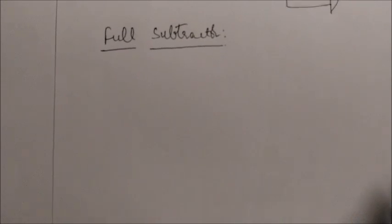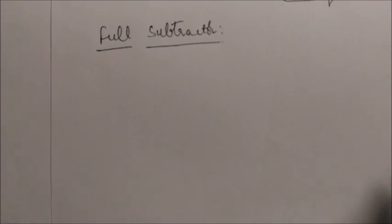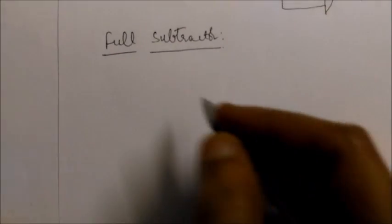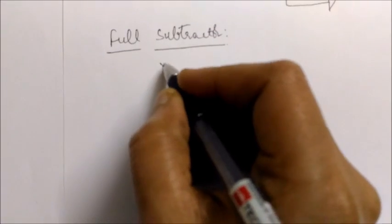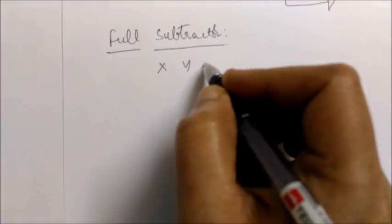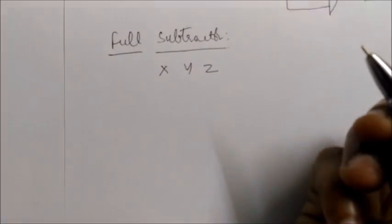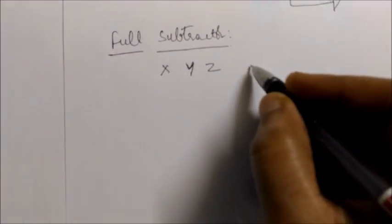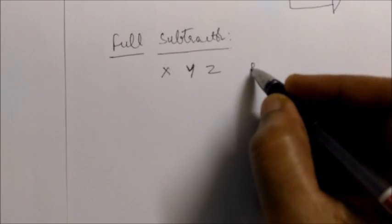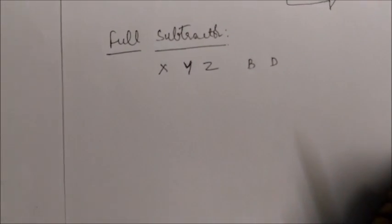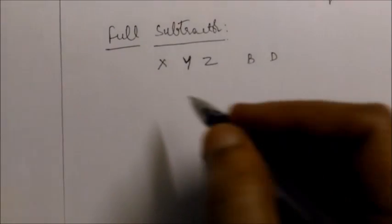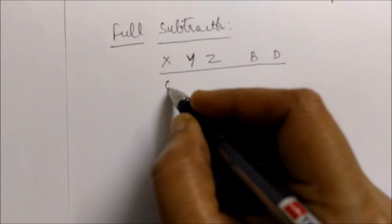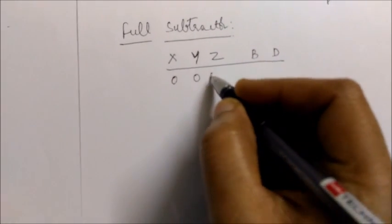In this video we are going to discuss about the full subtractor. A full subtractor will have three inputs x, y, and z, which represent the minuend, subtrahend, and borrow-in. The outputs are borrow and difference. With three inputs, we will consider eight combinations.